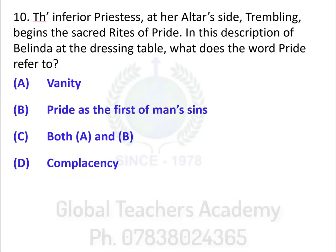Moving on to the next question. 'The inferior princes at her altar side trembling begins the sacred rites of pride.' In this description of Belinda at the dressing table, what does the word 'pride' refer to? A — vanity, B — pride as the first of man's sins, C — both A and B, D — complacency.